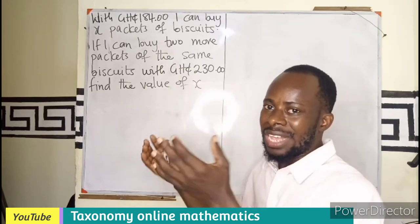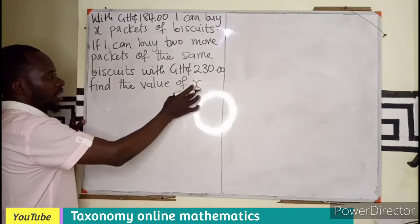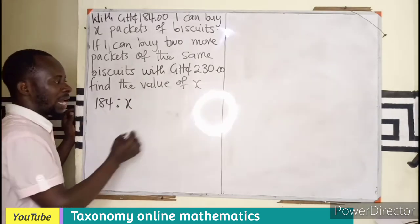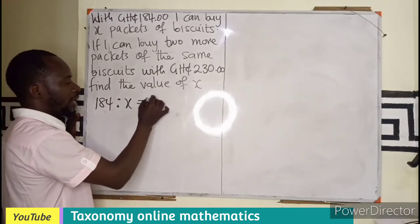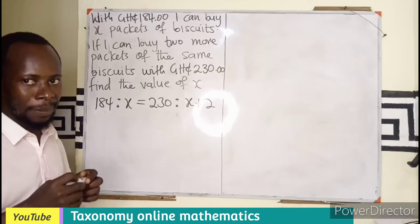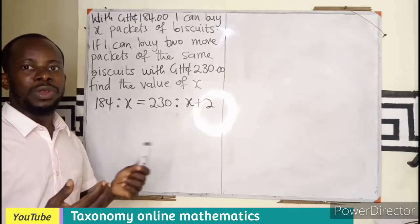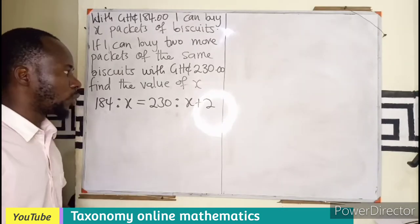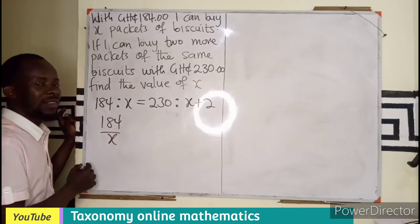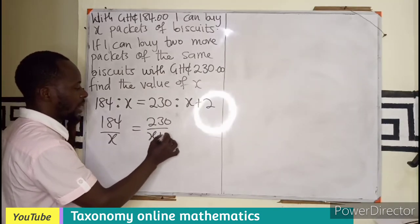184 is to X. So we can see there is a proportion here. If we are having 184 to X, that should equal 230 Ghana cedis to X plus 2. Don't forget they are the same biscuit. It means the values can be written as a proportion. So this becomes 184 over X, then we have 230 over X plus 2.